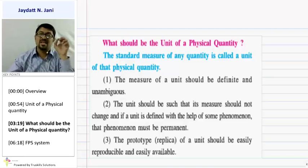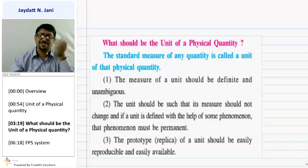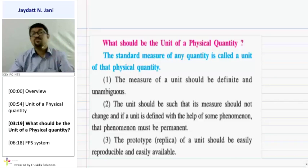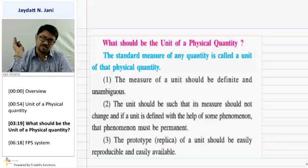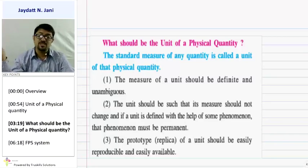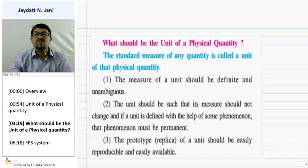For example, in this chapter we are going to study about a quantity called a light year. A light year means the distance traveled by light in one year. Light speed is very very high, and if light travels for one year, the distance it covers is known as a light year. The third point is that units should be easily reproducible and easily available — this is the prototype or replica condition.